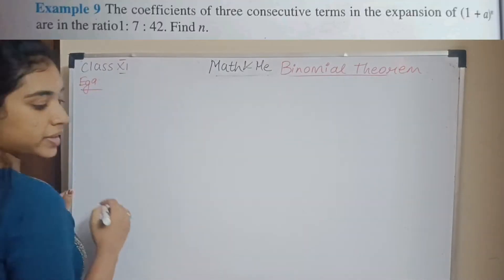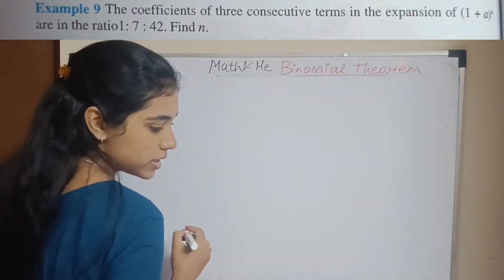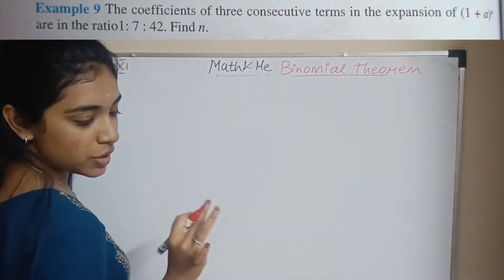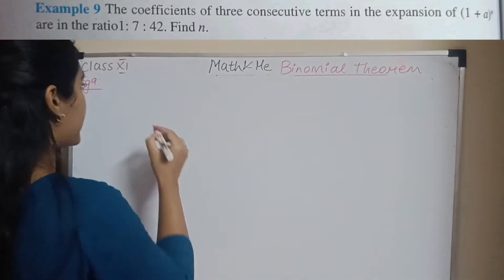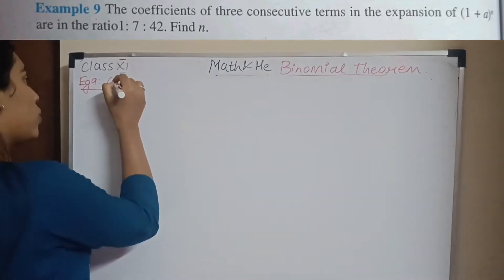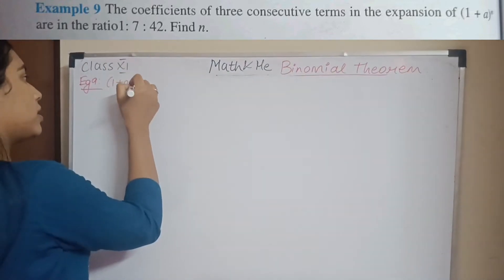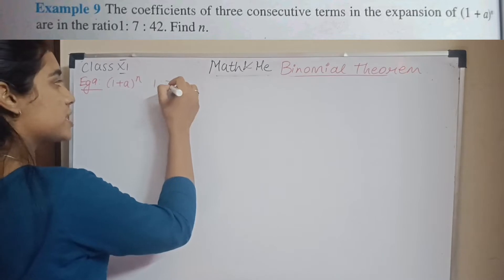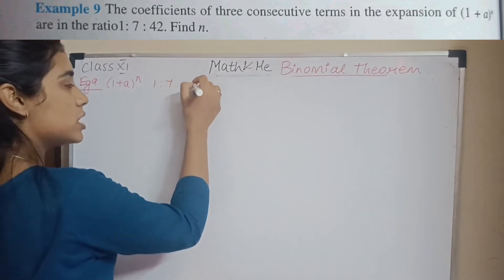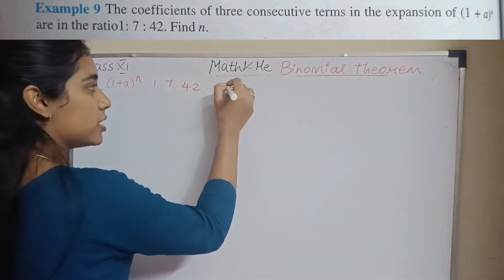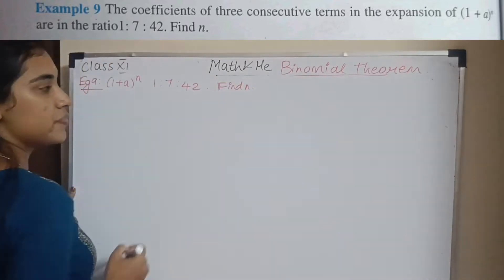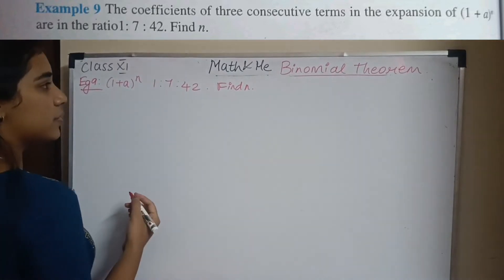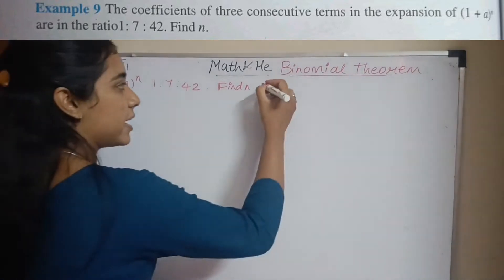Example 9: the coefficients of three consecutive terms in the expansion (1 + a)^n are in the ratio 1:7:42. Find n.